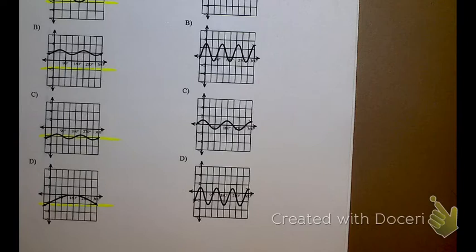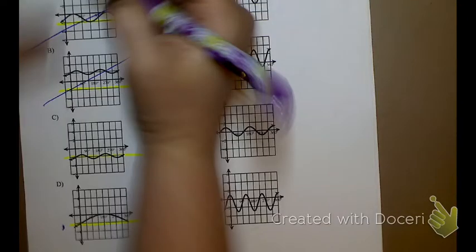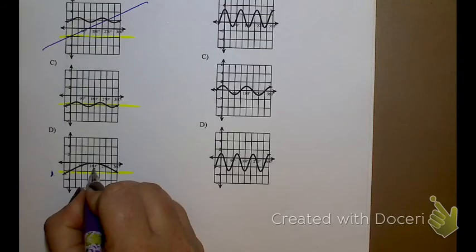The amplitude being 1/2 means that I'm only ever going to go up 1/2 from that midline. Does this one go up more than 1/2? Yes. Does this one seem to go up 1/2? Looks like it goes up 1/2 and down 1/2. So my answer is going to be C there.